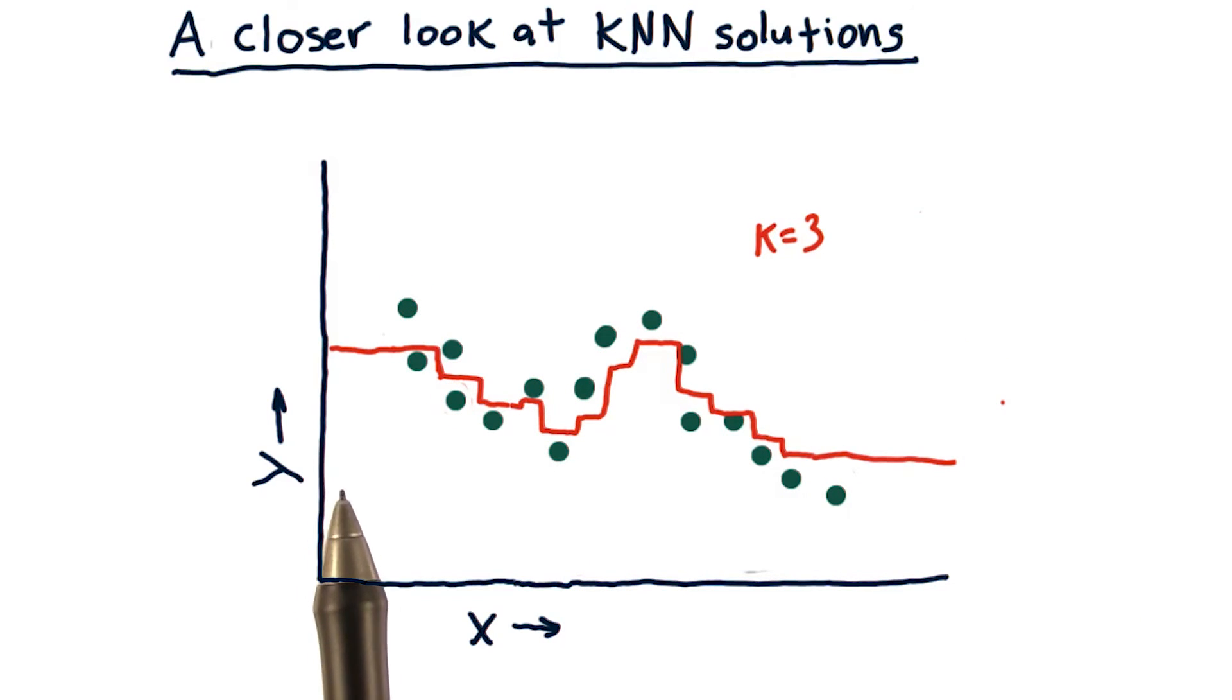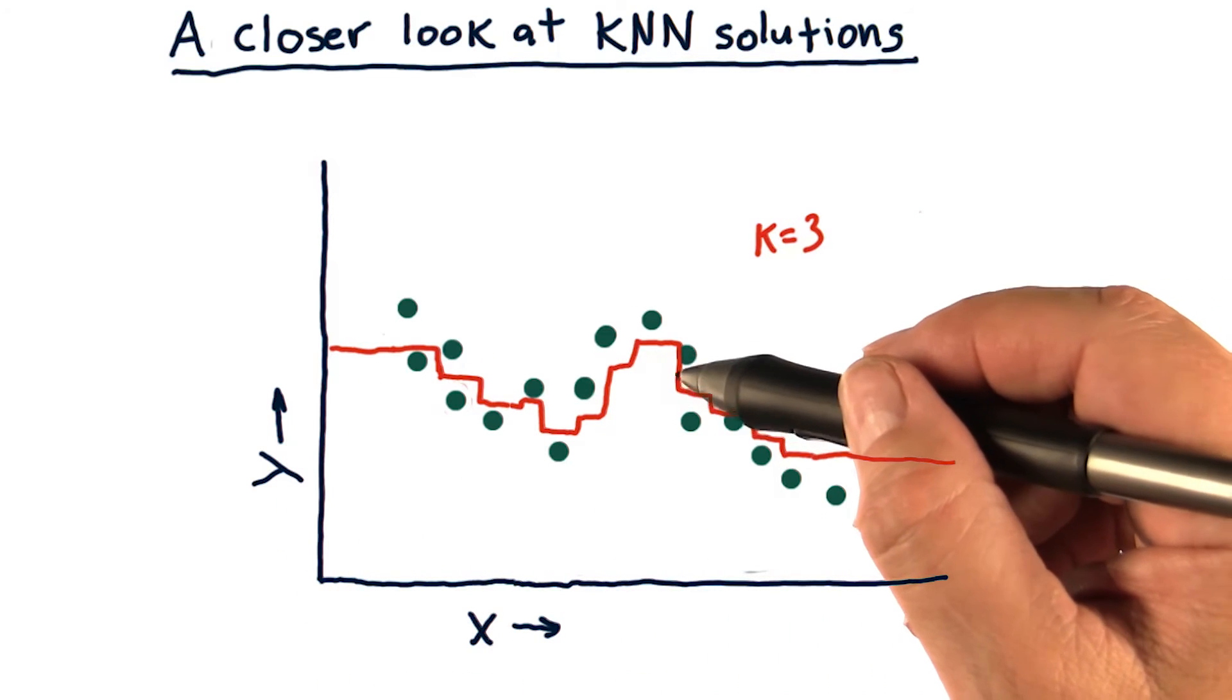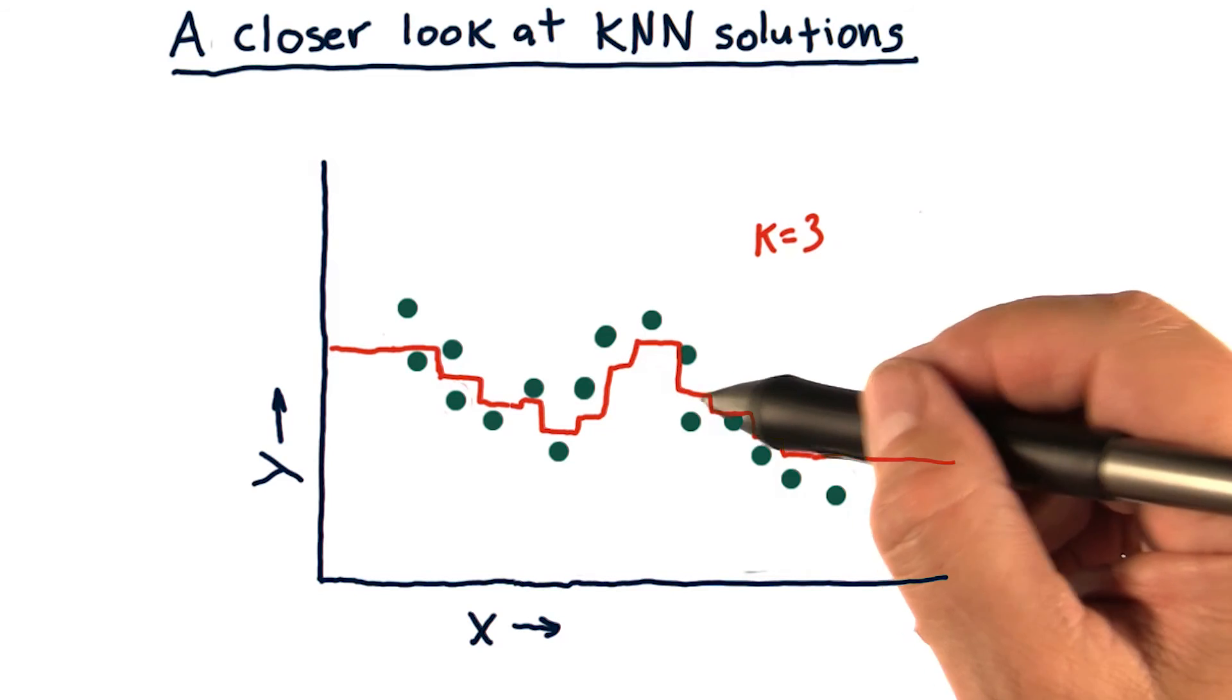If we query our model now from left to right in very, very tiny increments, we'll get the result that looks something like this. Note that indeed there are sort of jump points here.